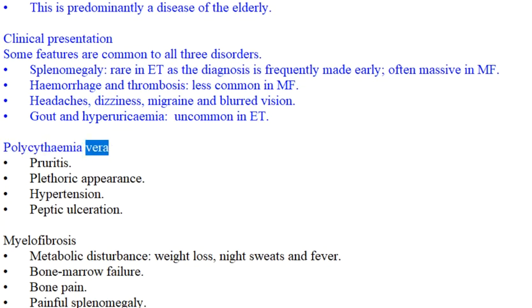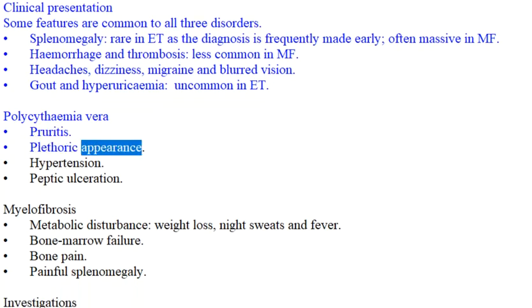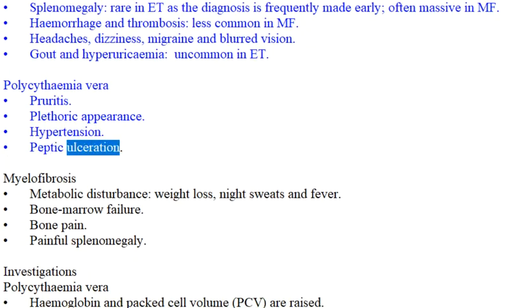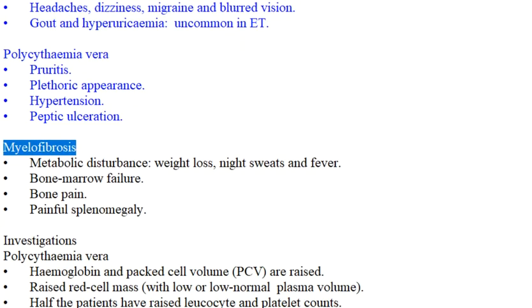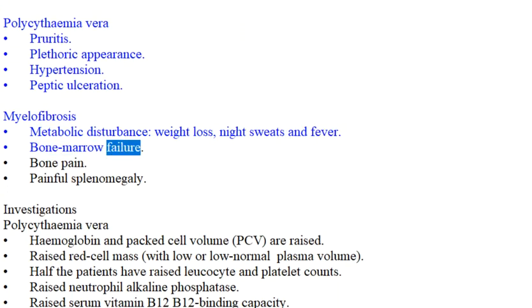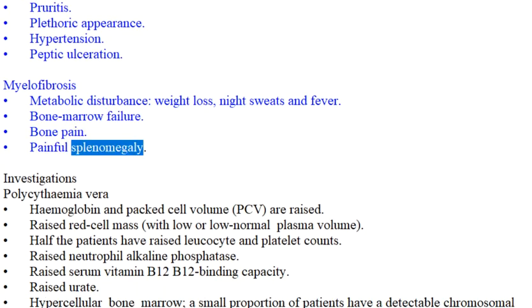Gout and hyperuricemia — uncommon in ET. Polycythemia vera specific features: pruritus, plethoric appearance, hypertension, and peptic ulceration. Myelofibrosis specific features: metabolic disturbance, weight loss, night sweats and fever, bone marrow failure, bone pain, and painful splenomegaly.